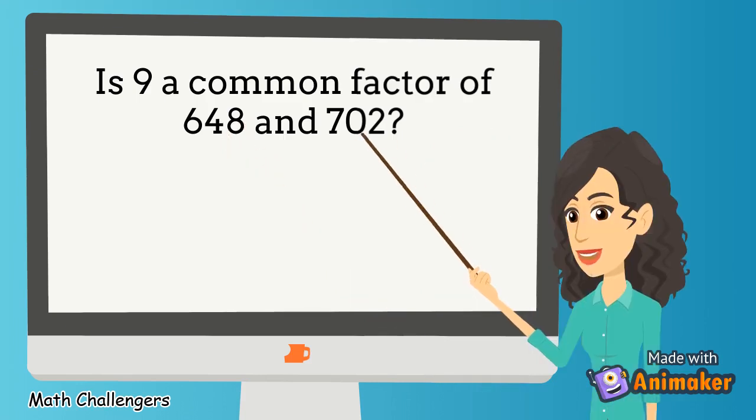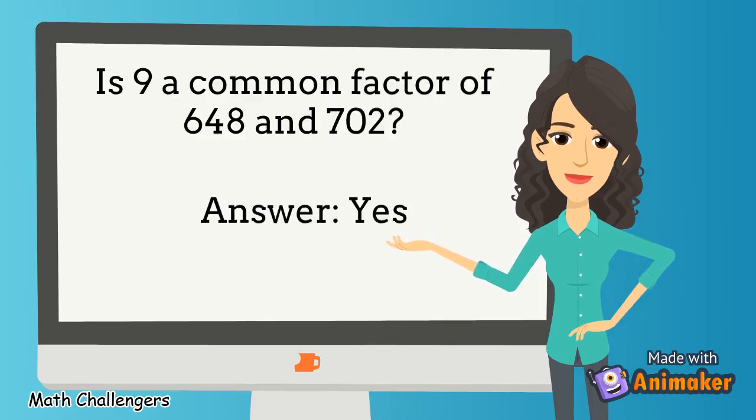How about 702? Is it divisible by 9? The sum of the digits is 9, therefore it is divisible by 9. Therefore, 9 is a common factor of 648 and 702.